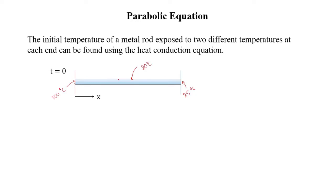We also assume that the surface of the metal rod is insulated. So in this particular case, we will have heat flow from the left end to the right end, and this heat flow is via conduction.